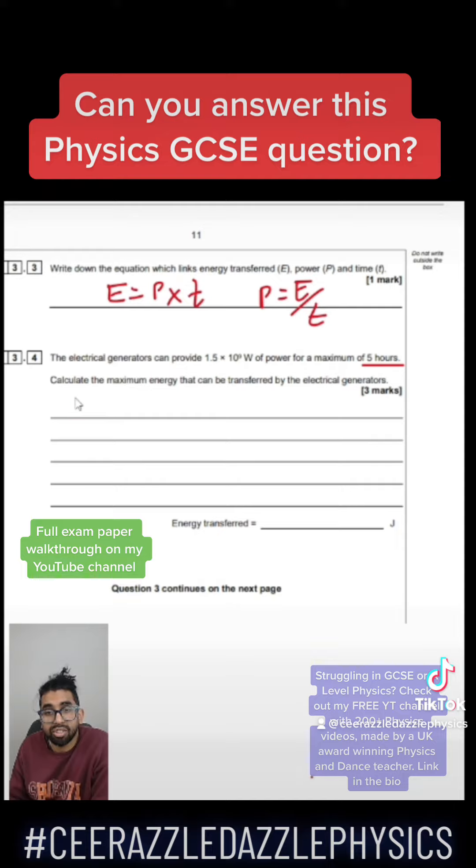You're trying to work out the energy, so energy is equal to the power multiplied by the time. So you've got the power over here, 1.5 times by 10 to the power of 9. Don't forget, power is measured in watts, that's how I knew it was the power.